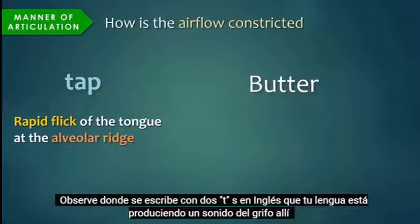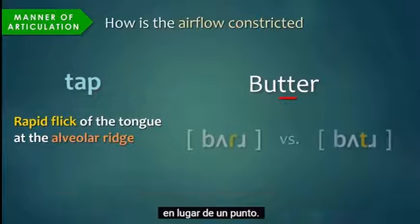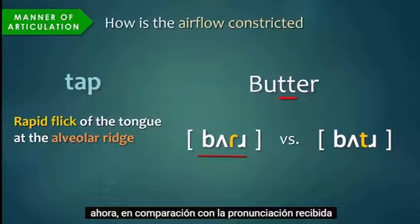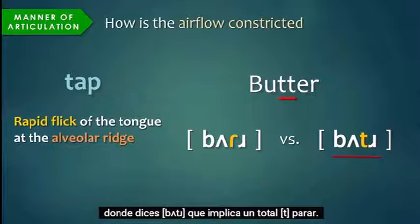Notice that where we write it with two t's in English, your tongue is actually producing a tap sound there, rather than a full stop or plosive sound. So in North American English, you say butter — as compared to received pronunciation, where you say butter with a full t stop.